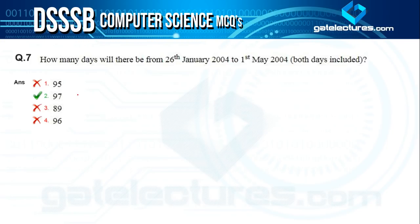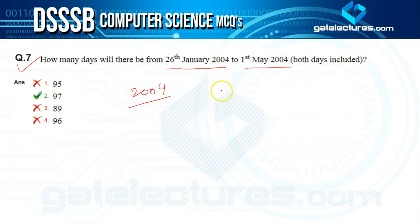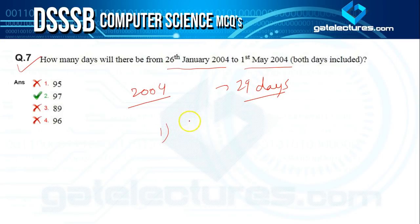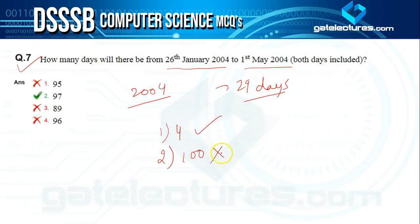Question seven: how many days will there be from 26th January 2004 to 1st May 2004, including both days? First we check whether 2004 is a leap year. The conditions are: divisible by 4 makes it a leap year; but if also divisible by 100 it is not, unless divisible by 400 — in which case it is a leap year.